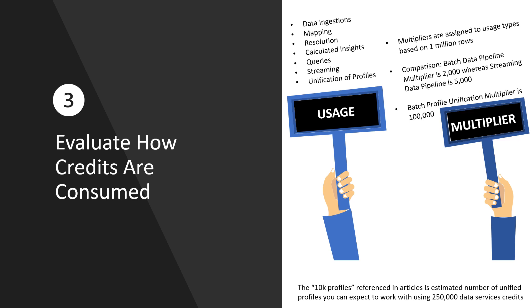Batch profile unification is the most expensive data usage with a cost of 100,000 credits per 1 million rows processed. In some articles, you may read that this free Data Cloud offer is good for 10,000 profiles. That isn't a limit, but rather just an approximation of how many records you should plan on unifying with the 250,000 credits.